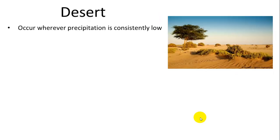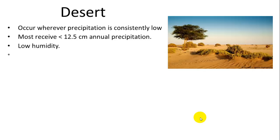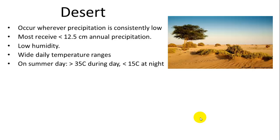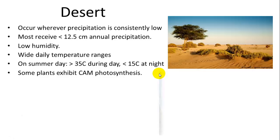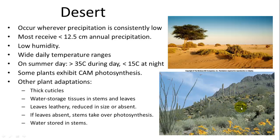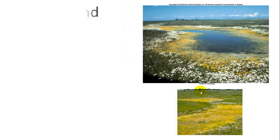The desert is characterized by very low precipitation — less than 12.5 centimeters per year — and very low humidity. It has wide daily temperature ranges, very hot in the daytime, with up to a 20-degree shift from day to night. Some plants exhibit CAM photosynthesis, including cacti. Other adaptations for resistance against desiccation include thick cuticles, water storage in different parts of the plant, leathery leaves, stem photosynthesis when leaves are absent, and water stored in the stems.